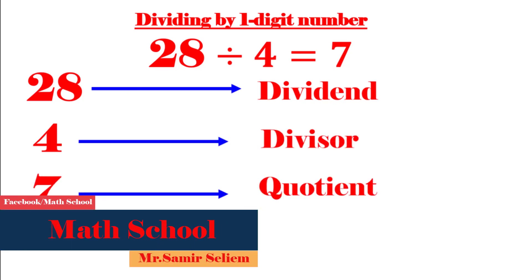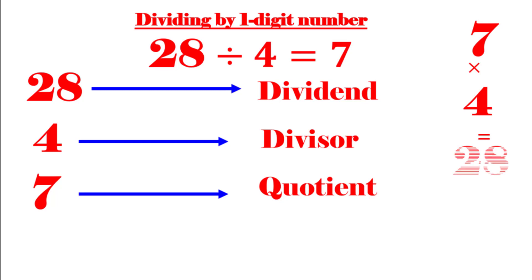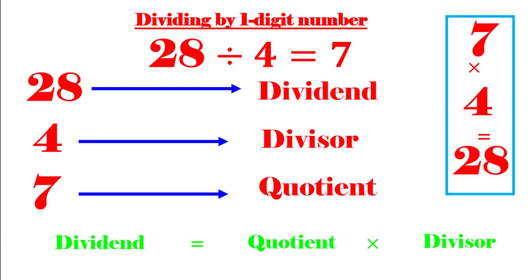What is the relation between the three terms — dividend, divisor, and quotient? We can deduce that 7 times 4 equals 28, so the dividend, the greatest one, equals the quotient times the divisor.